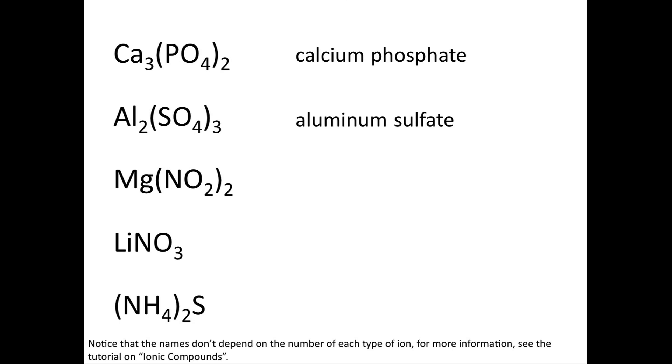Looking at the third example we have Mg and then NO2 in parentheses with a 2 outside. Magnesium is a monatomic cation, it gets to keep its name magnesium, and then NO2 is the nitrite anion. Be careful that you don't confuse the -ites and the -ates. Nitrite has the formula NO2 with a charge of minus one. Nitrate has the formula NO3 with a charge of minus one.